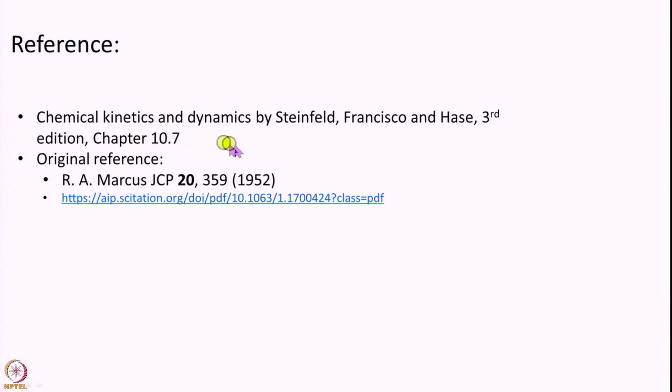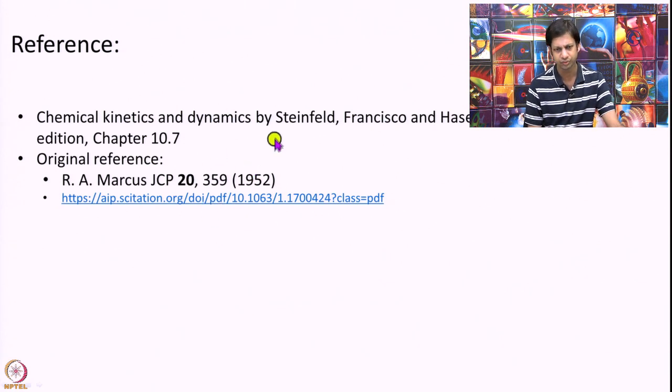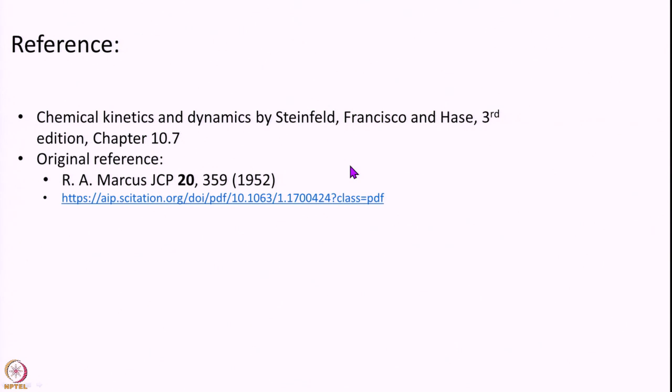I have also given the original reference for those who are interested. The history of this work is as follows: in the late 1920s — 1927 and 1928 — Rice, Ramsberger, and Kessel formulated this theory for unimolecular decay. They were trying to understand how to calculate the rate constant at constant energy and match experimental data. But that model does not work well; it is a very simple model with a lot of deficiencies.